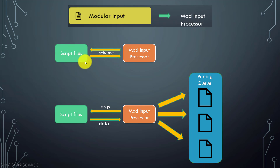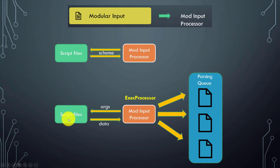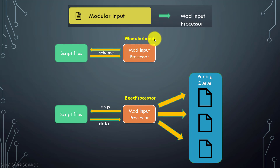The schema part is specific to modular input. We'll see how to create a modular input in the next video. For modular input there are two components: the schema introspection part uses the component name 'modular inputs' in the internal index, while the execution part uses the same 'exec processor' component as scripted input.